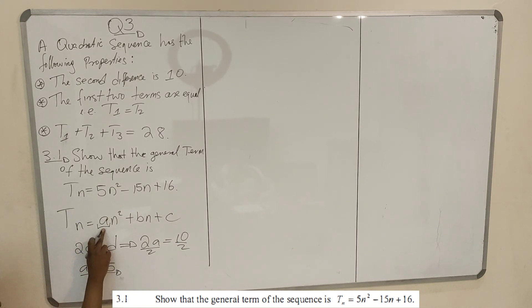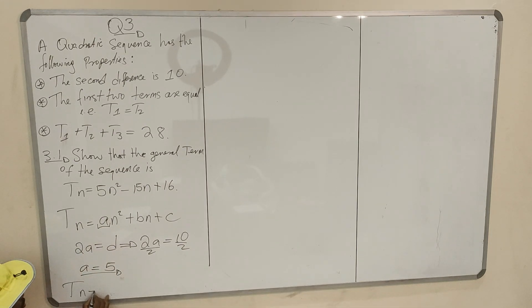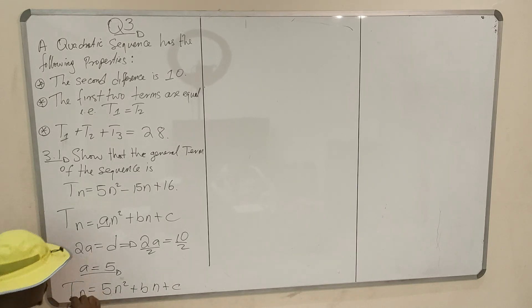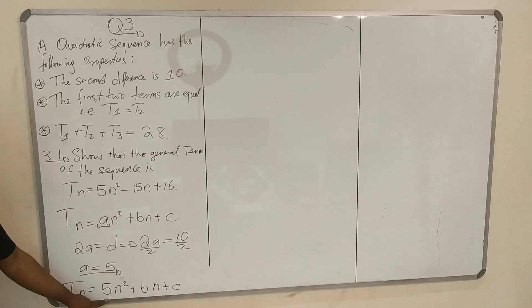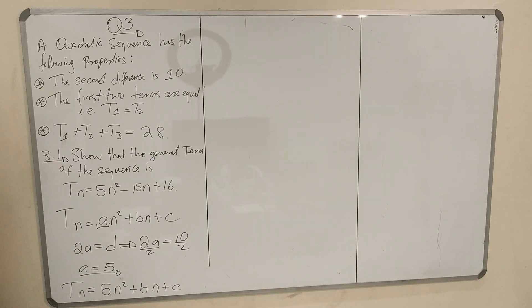Which means you can write your general term as: Tₙ = 5n² + Bn + C. We have found A. Now we are missing B and C. Let's go to the next property.